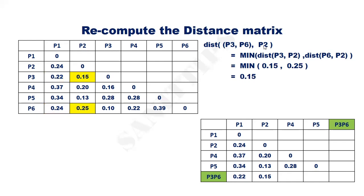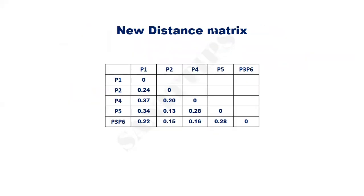The distance between {P3, P6} and P2 is the minimum of d(P3,P2)=0.15 and d(P6,P2)=0.25, giving 0.15. Similarly, the distance between {P3, P6} and P4 is 0.16. The distance between {P3, P6} and P5 is 0.18, and the distance from {P3, P6} to itself is 0. Here is the updated distance matrix.